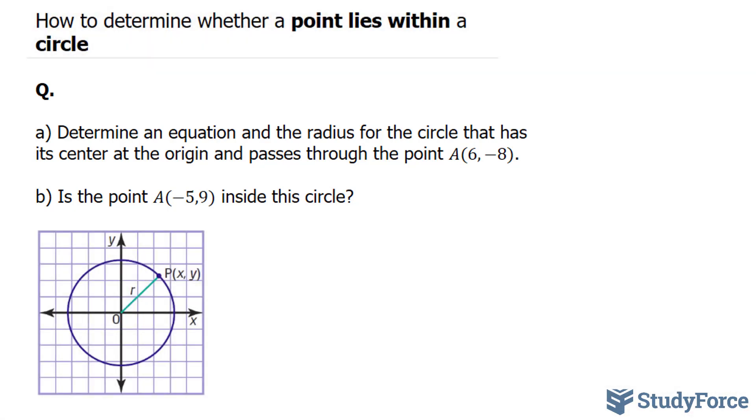Remember that all circles that are centered at the origin have the formula x squared plus y squared is equal to r squared, where r represents the radius.